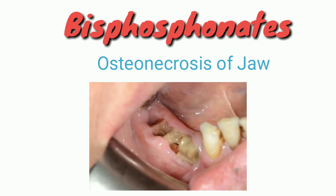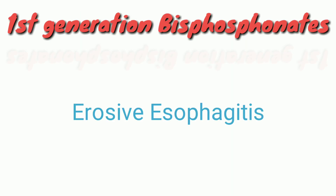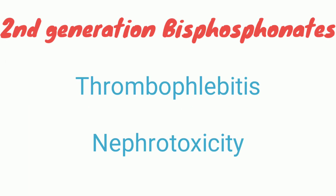First generation bisphosphonates cause GIT pathology, specifically erosive esophagitis. Second generation bisphosphonates cause thrombophlebitis and renal toxicity, that is nephrotoxicity.